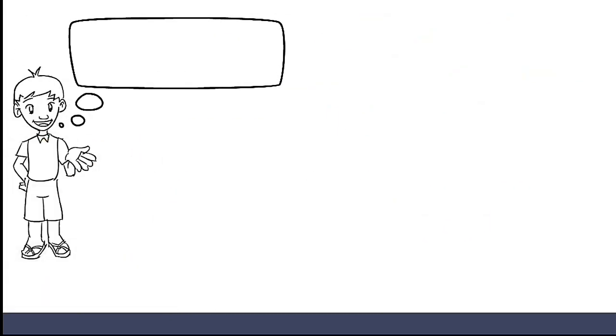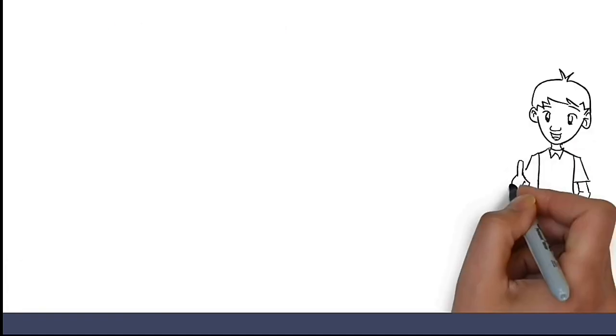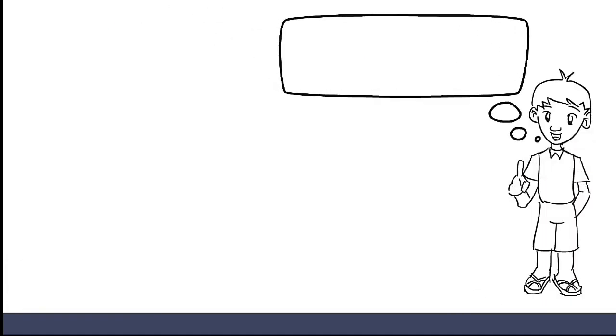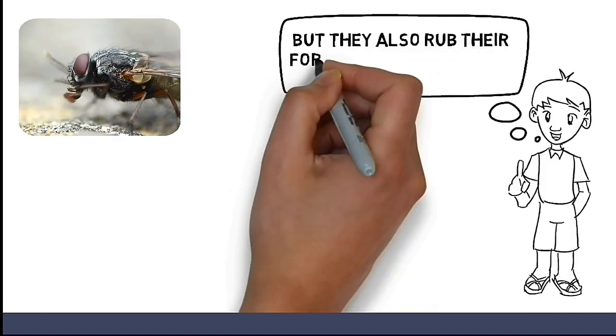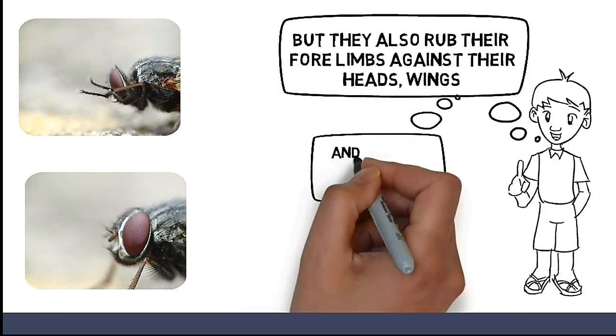What we see them doing mostly is rubbing their forelimbs together, but they also rub their forelimbs against their heads and even rub their hind limbs together.